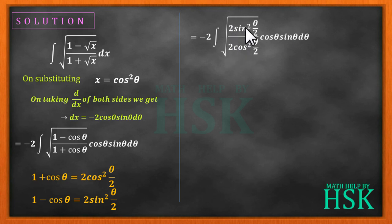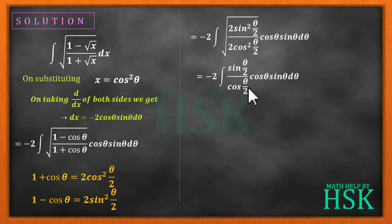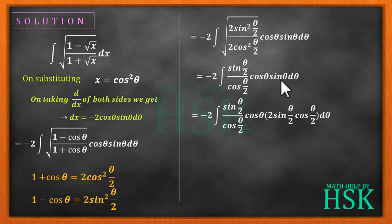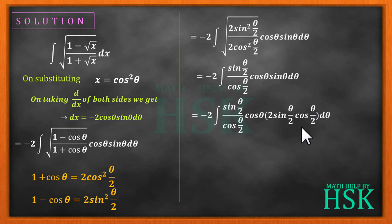So I obtain this as equal to minus 2 times integration of square root of (2 sin²(θ/2)) upon (2 cos²(θ/2)) into cos θ sin θ dθ. The two's cancel out, and the square root gives me sin(θ/2) over cos(θ/2), multiplied by cos θ sin θ dθ. This cos(θ/2) in the denominator and the cos(θ/2) from the next step cancel out, and sin(θ/2) times sin(θ/2) gives me sin²(θ/2).